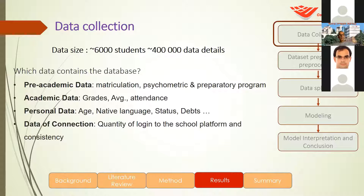The data size is about 6,000 students and 400,000 data details. The data we have included pre-academic data such as matriculation scores, psychometric scores (known as SAT in the United States), and a preparatory program. Personal data includes age, native language, status, debt to the college, date of connection, quality of logging to the school platform, and consistency.